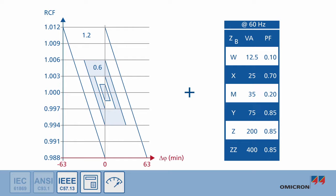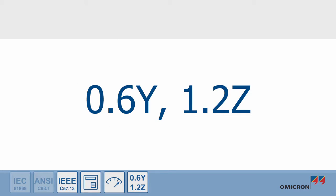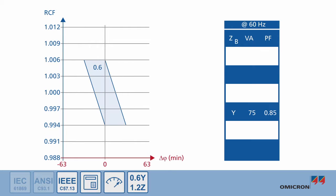Consequently, a combined accuracy burden rating is given. For instance, 0.6Y1.2Z means 0.6 accuracy class for burdens up to 75VA and 1.2 accuracy class for burdens from 75 to 200VA.